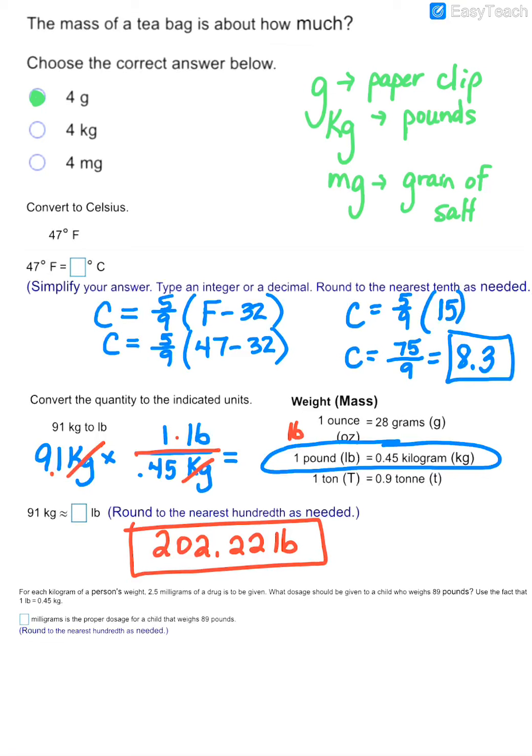And then finally, it says that for each kilogram of a person's weight, 2.5 milligrams of a drug is to be given. So they want to know what dosage should be given to a child who weighs 89 pounds. So we're going to have to first convert that child's weight into kilograms. So if we have 89 pounds, your pounds this time have to go on bottom, your kilograms will have to go on top.